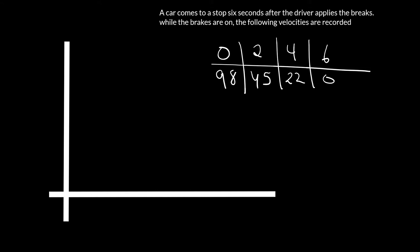So they record in, this is in seconds, zero seconds at the start, two seconds, four seconds, six seconds, and then they get the velocity, which is in feet per second.